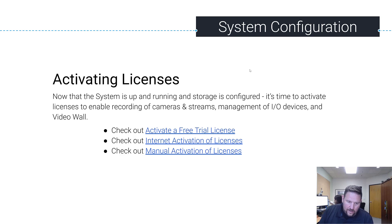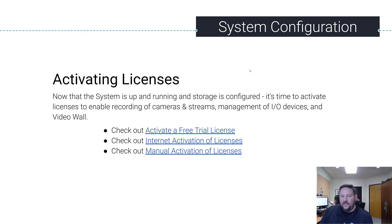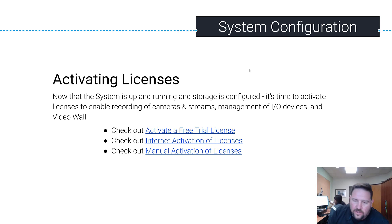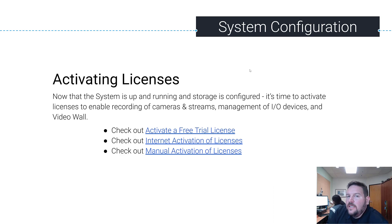There are two ways to activate licenses. First, activating a free trial license is simple — you need to have an active internet connection, just press the 'Activate Trial' button and you'll get four free licenses for 30 days to trial the software.